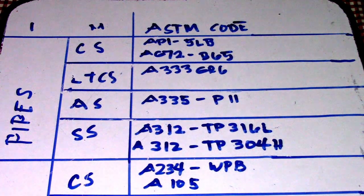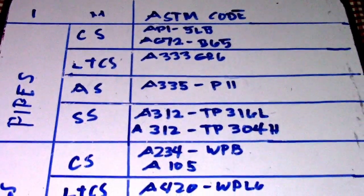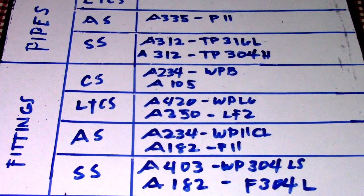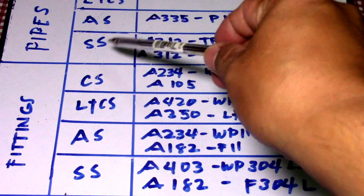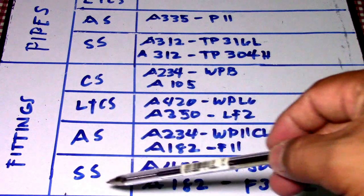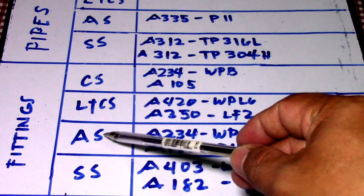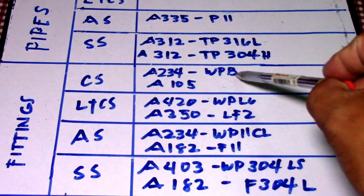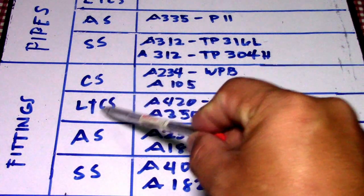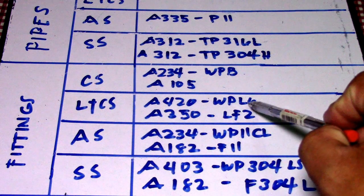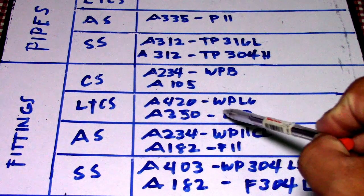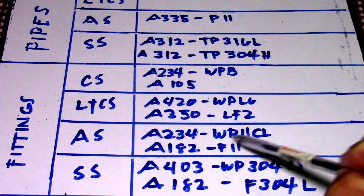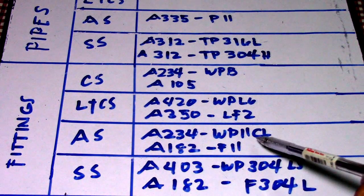Next we have fittings. The fittings cover the same material categories: CS, LTCS, AS, and SS. For carbon steel fittings, ASTM codes are A234 WPB and A105. For low-temperature carbon steel fittings, the codes are A420 WPL6 and A350-LF2.